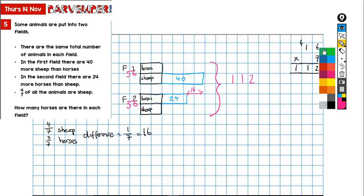Right, where does that take me? I know that there are, let's look at field one. I know that there are 40 more sheep in field one, and the remainder, so the difference between 40 and 56, must be split between horses and sheep because these two are equal values.